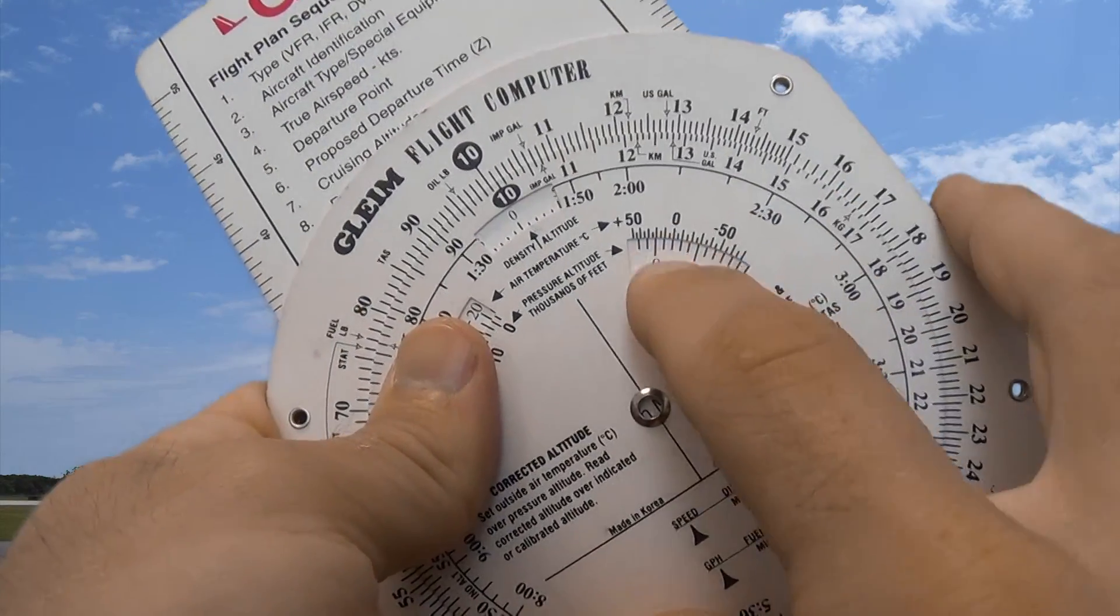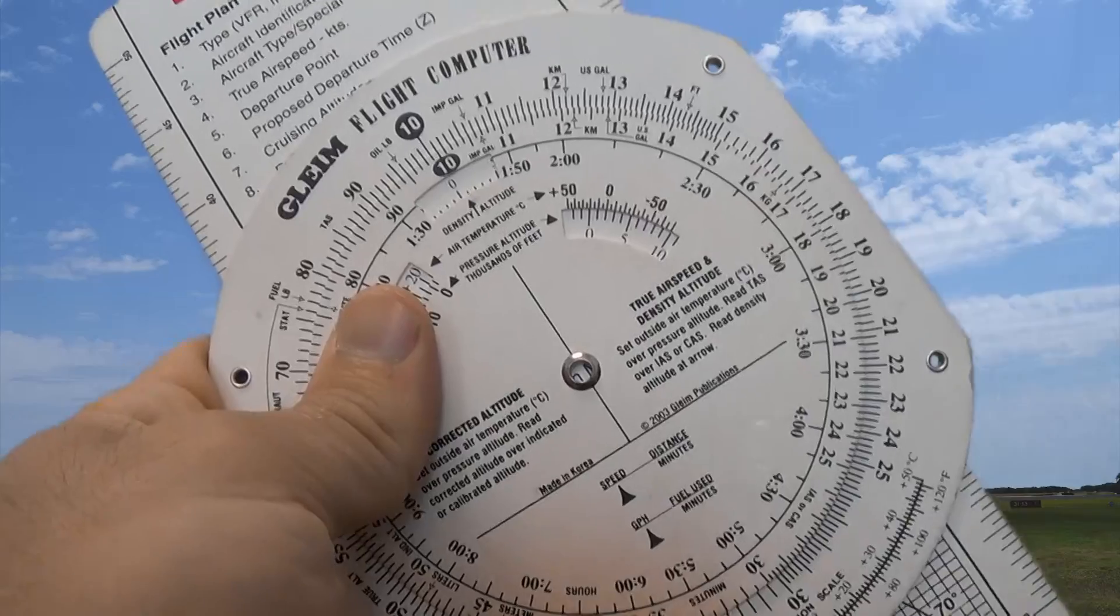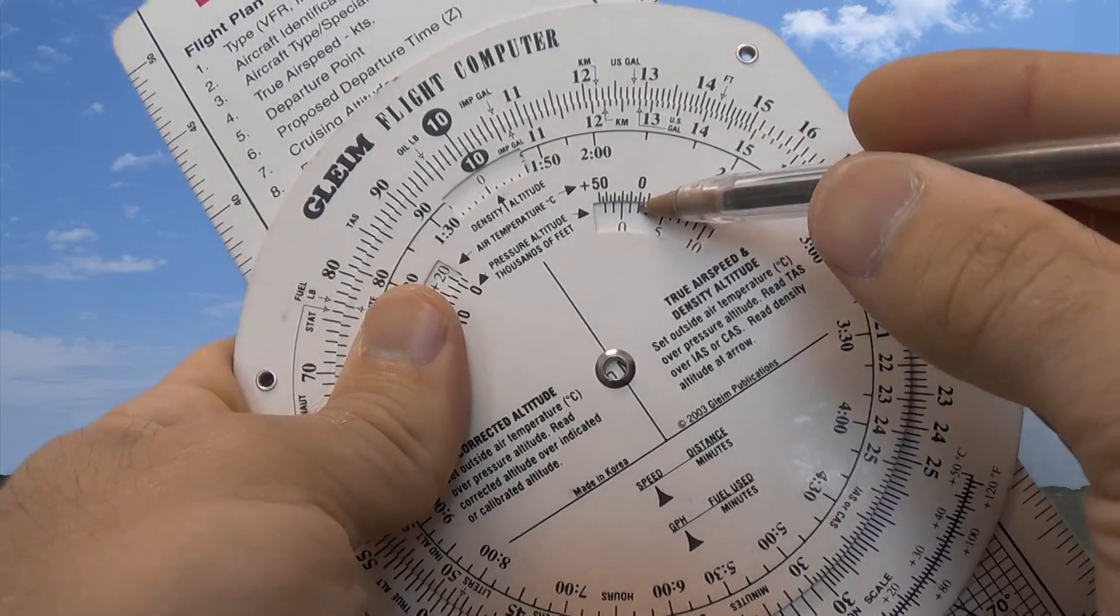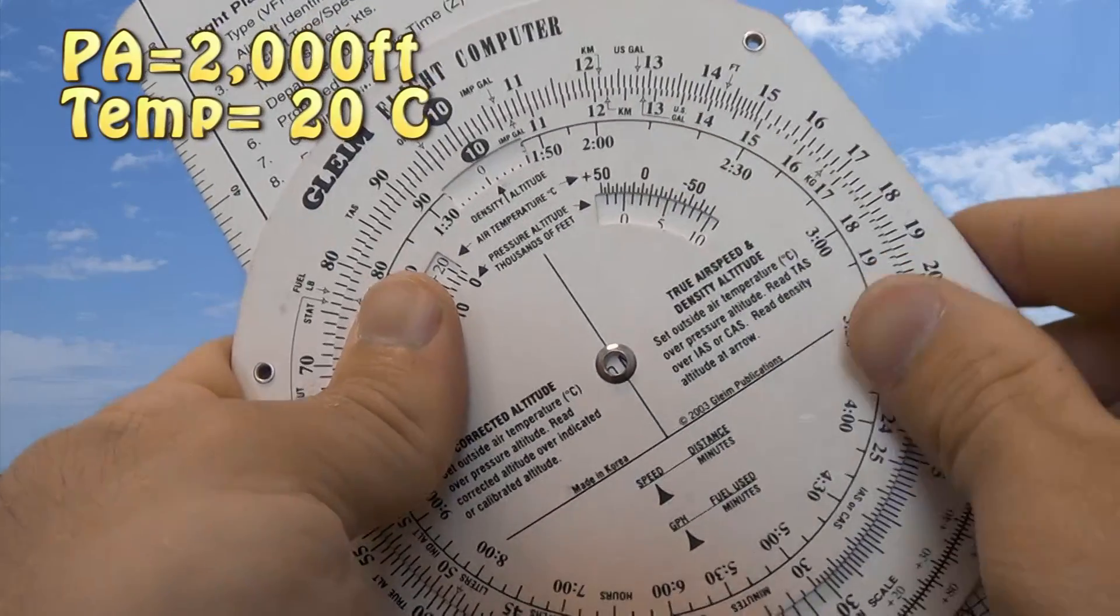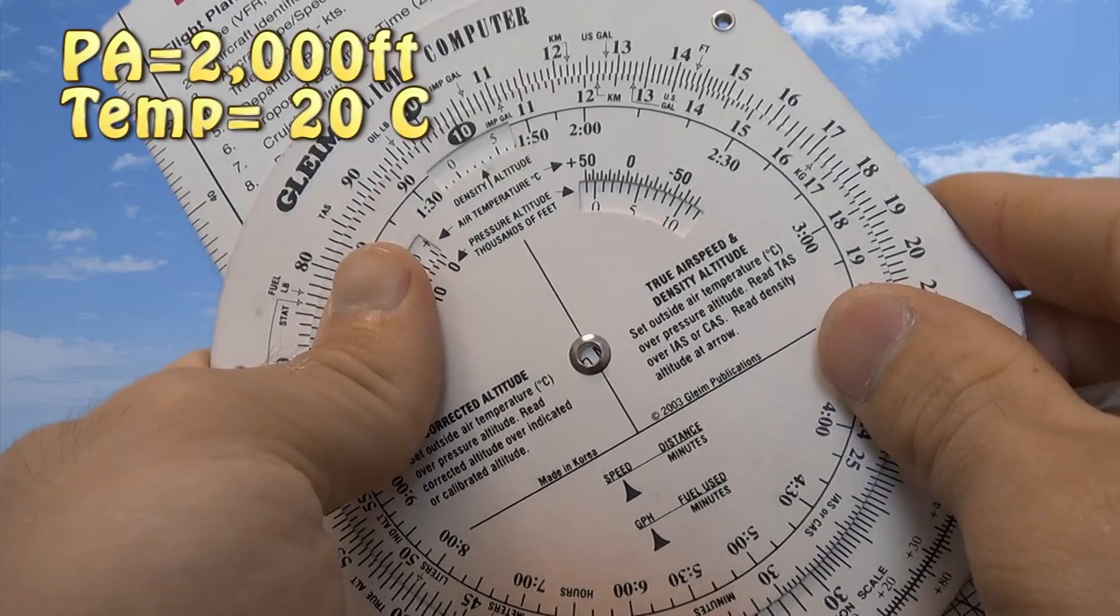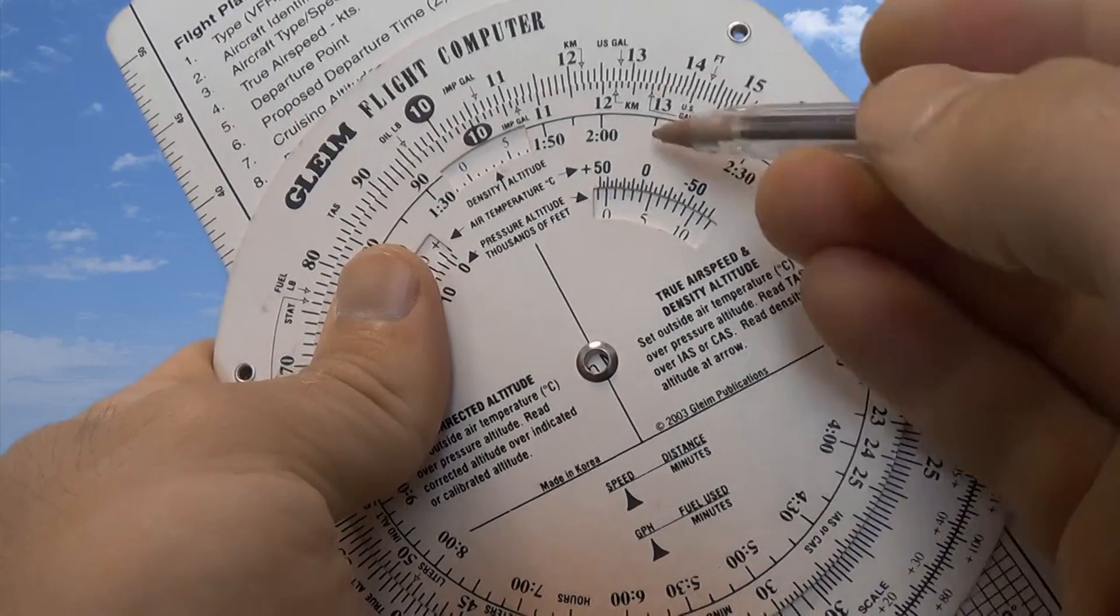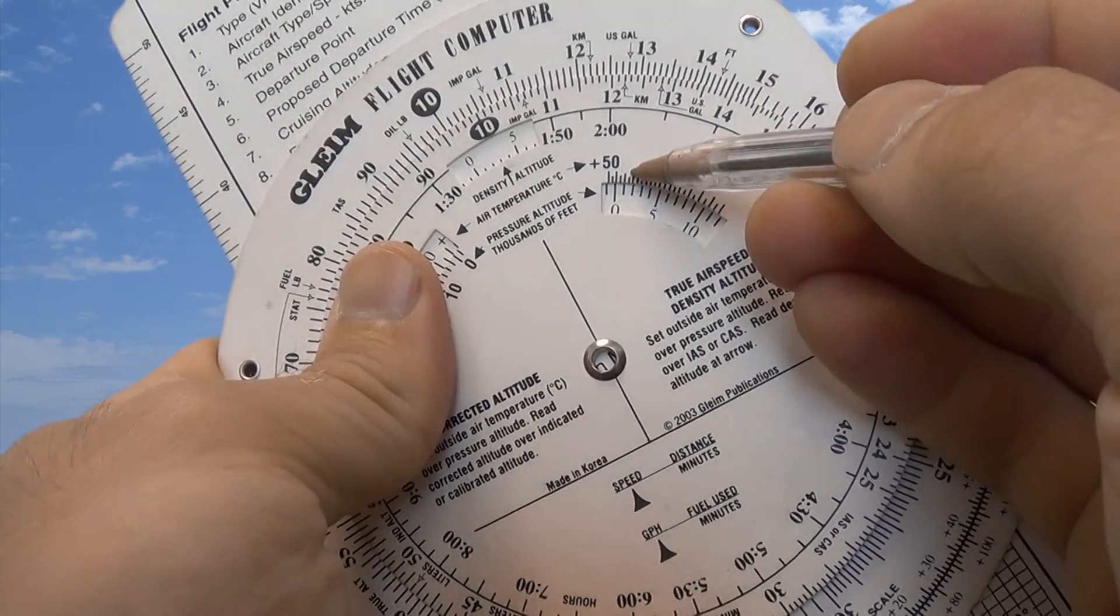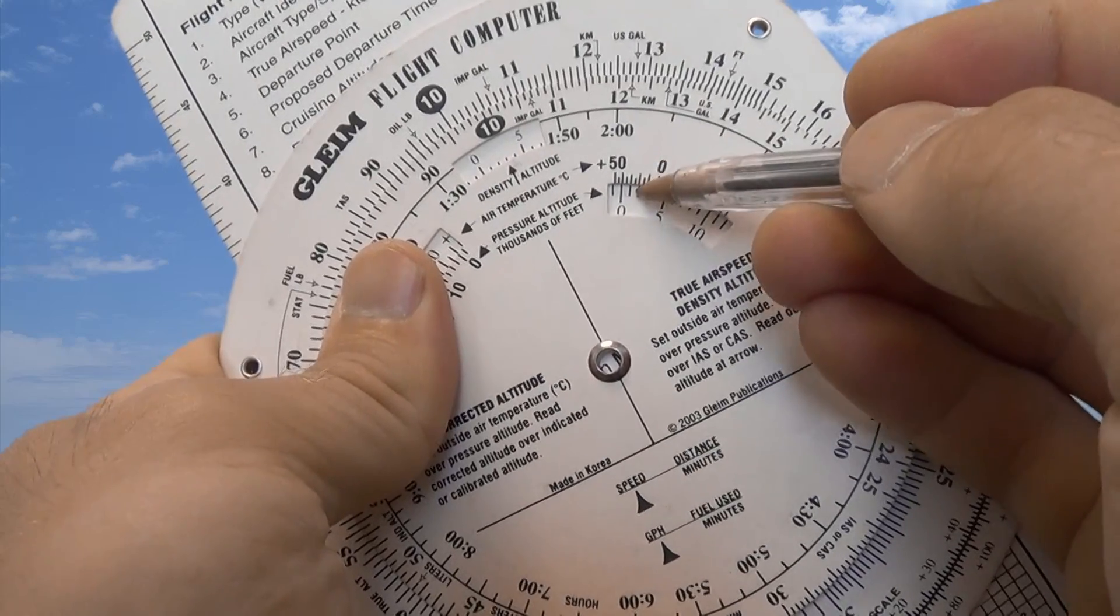So let's say pressure altitude is 2,000 feet and we read that from the altimeter with 29.92 and then we go ahead and set our temperature to 20 degrees Celsius. So we've got 10, 20, and then 2,000 feet, we've got those two lines lined up there.